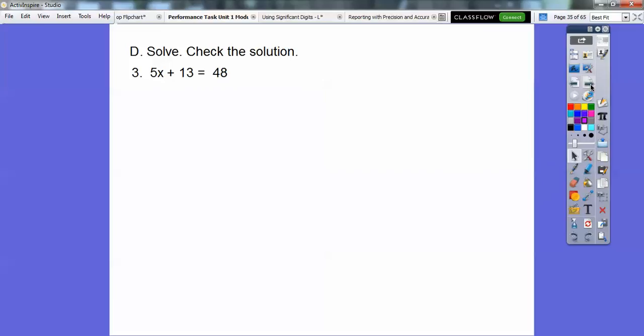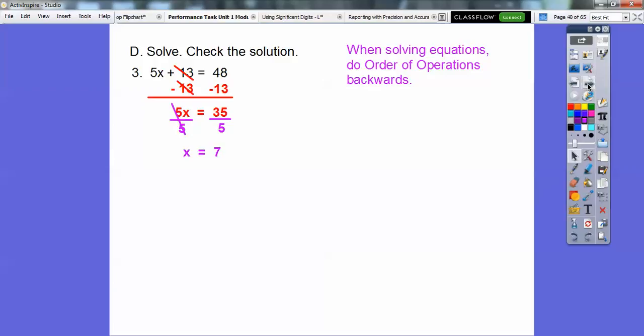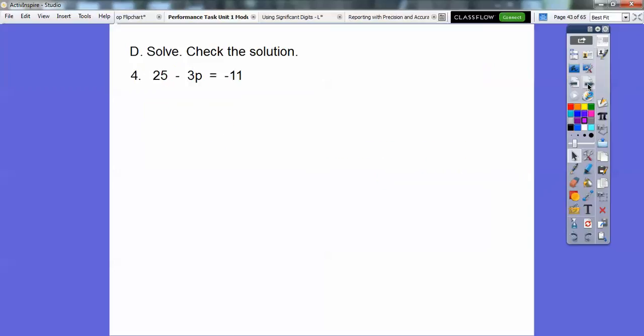So here, 5x plus 13 equals 48. When we solve equations like this, we do the order of operations backwards. So we do all the addition and subtraction first. This says plus 13. So we're going to do the minus 13 on both sides first. You've got to do it to both sides. Now we're going to divide by 5, and it goes in there 7 times. And to check, 5 times 7 is 35, and when you add 35 and 13, we get 48.